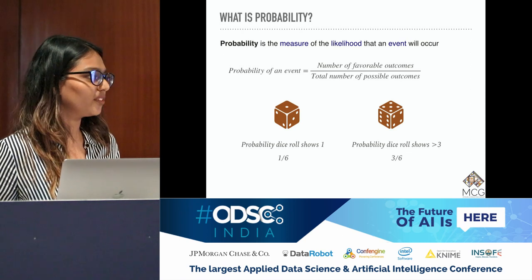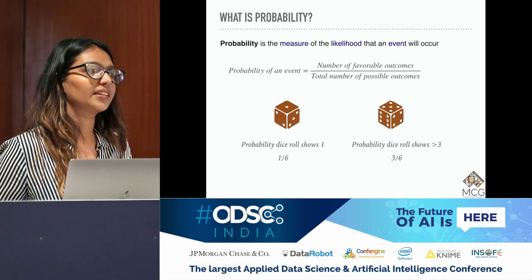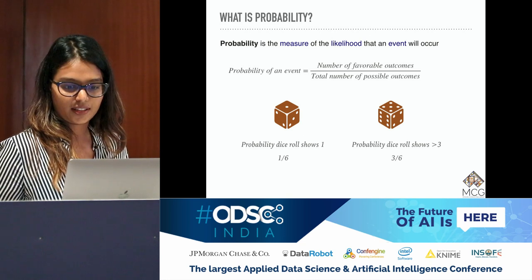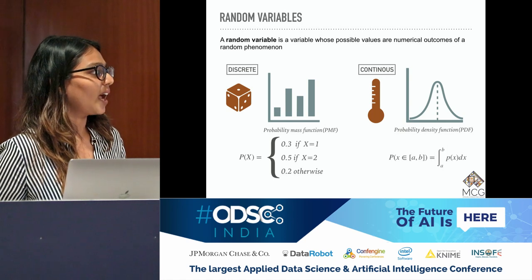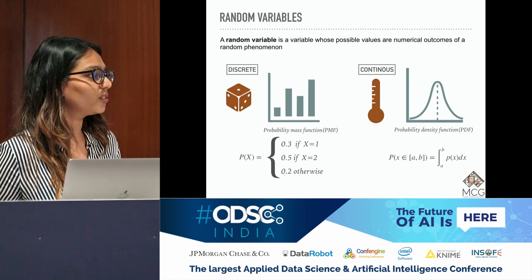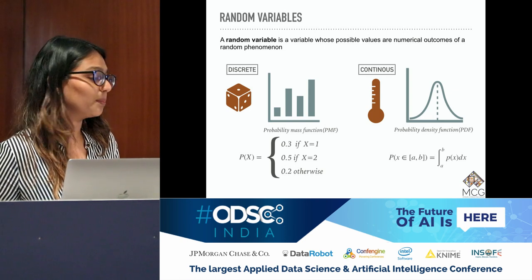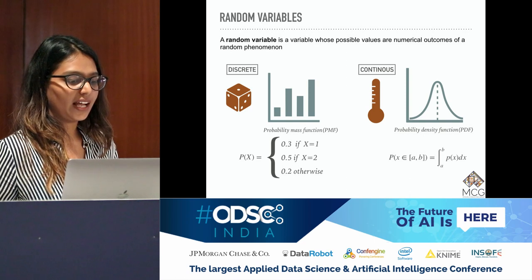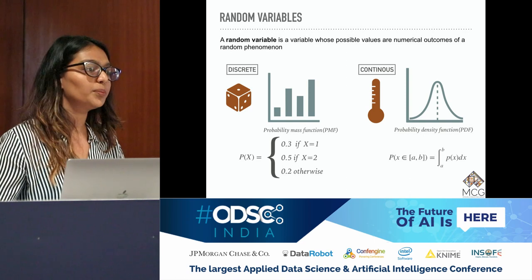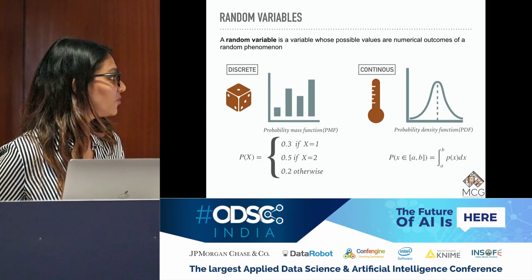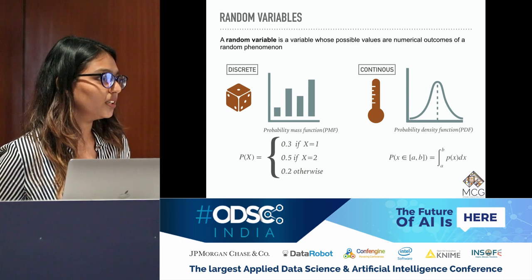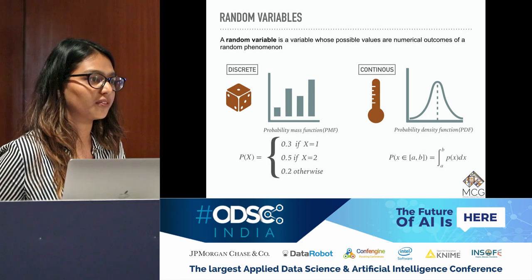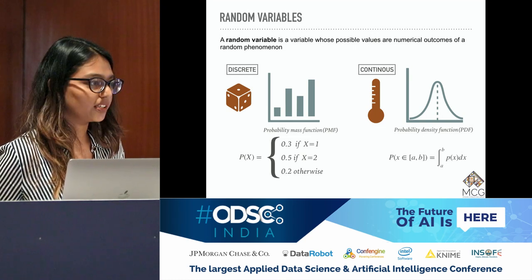Let me reiterate some basic concepts so we are on the same page. Probability is the number of favorable outcomes to the total number of possible outcomes. If you roll an unbiased dice, the probability of getting one is one-by-six. Random variables are numerical outcomes of random phenomena. A random variable can be discrete or continuous. For a discrete random variable, we define a probability mass function — in the form of a bar chart. For a continuous one, it is a continuous curve and to calculate probability we take the area under the graph.